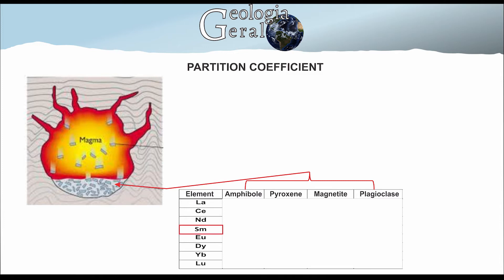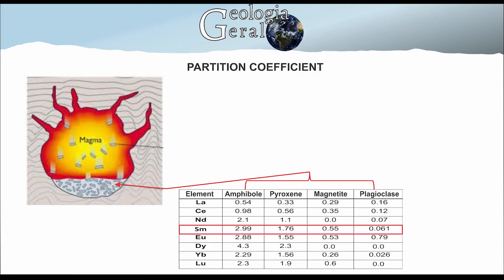The element Ce has KD values of 2.99, 1.76, 0.55, and 0.061 for amphibol, pyroxene, magnetite, and plagioclase respectively. The mineral with the higher KD for Ce has higher priority to capture this element. Hence, it must first enter the structure of amphibol, then pyroxene, followed by magnetite, and finally plagioclase.